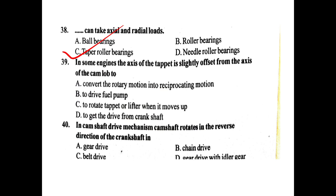In some engines, the axis of the tappet is slightly offset from the axis of the cam lobe — this causes the tappet to rotate when lifted. The camshaft rotates in the reverse direction of the crankshaft in a gear drive mechanism.